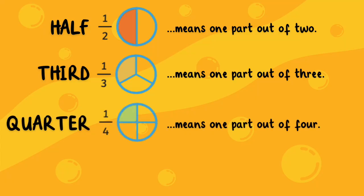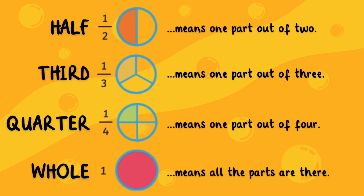Quarter means one part out of four. Whole means all the parts are there, like four out of four or two out of two.